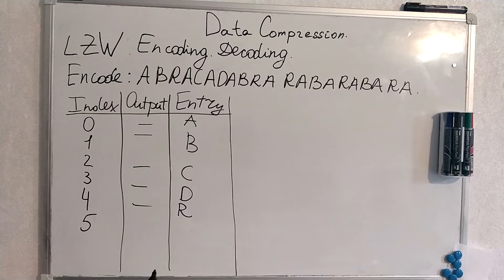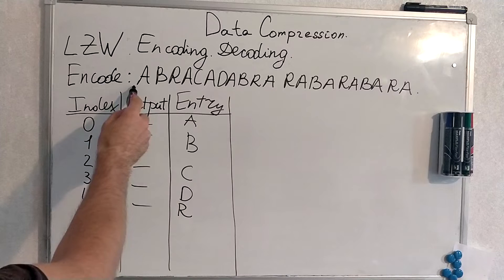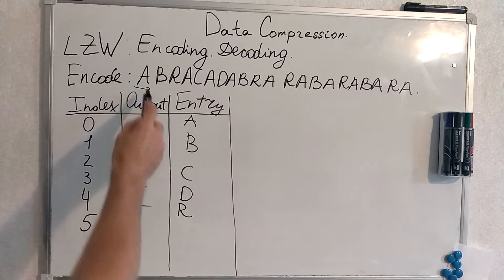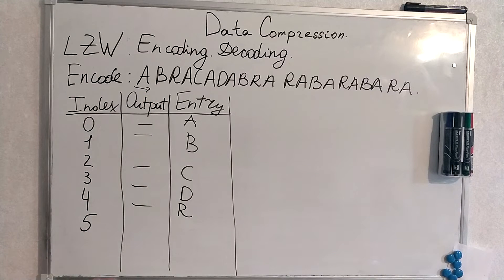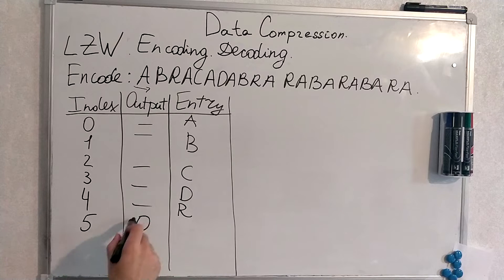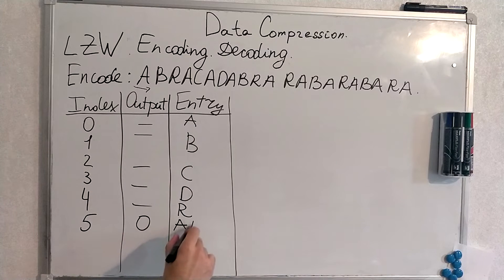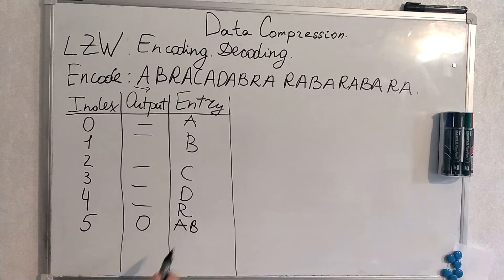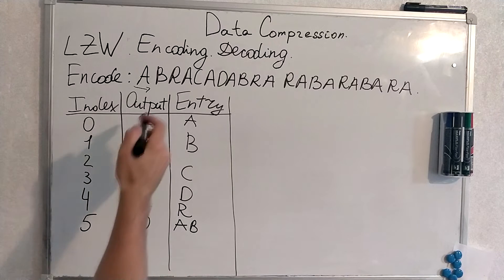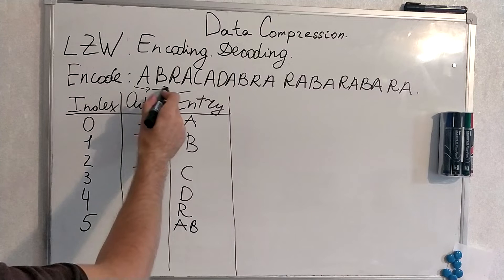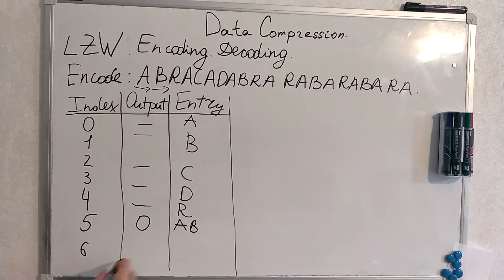We start from the very beginning, from here. We are encoding A now. So the output will be 0 because we have faced A and concatenated it with B. We haven't encoded AB yet, but we formulated the new entry. B is not encoded yet — we are on B now, so the output will be 1.